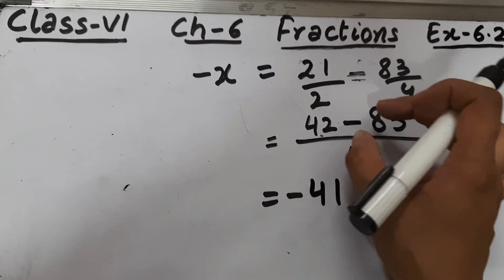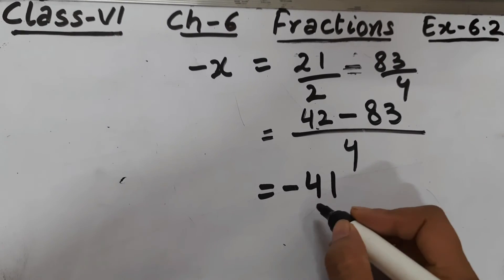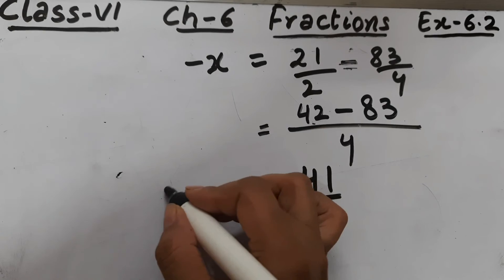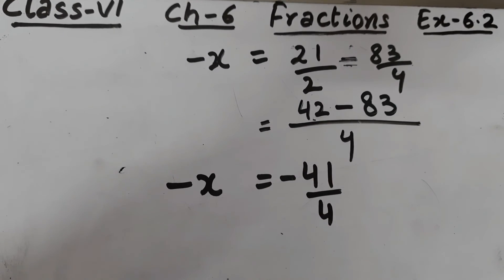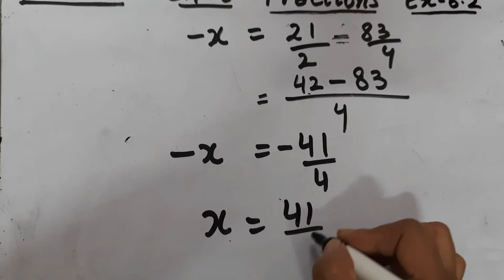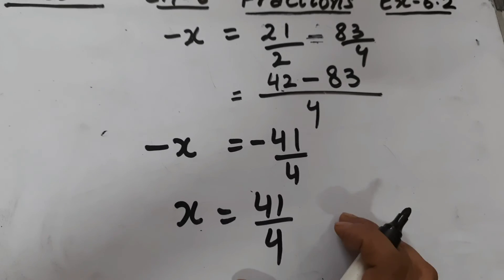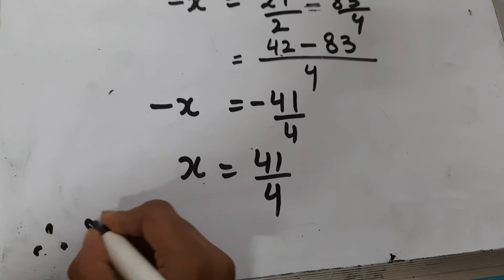And this is the value of minus x, but we need the value of x. So what will be x? x will be 41/4. x aapka kya ho jayega 41/4. Therefore the number to be subtracted is